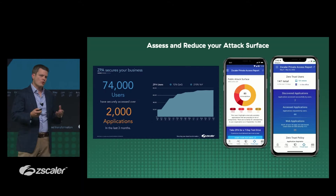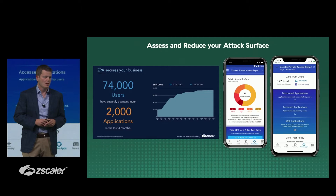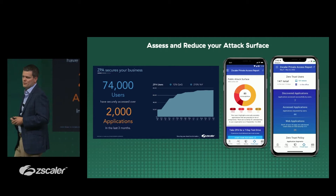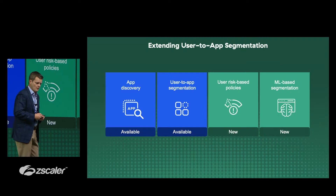Two things being brought into the Zscaler for users portfolio are visibility into your existing attack surface and visibility into your existing usage of Zscaler Private Access. These will be incorporated into the exec reporting suite, showing up in quarterly business review PowerPoints downloadable from the ZIA console. For an up-to-the-minute view, external attack surface data is included in the exec insights iOS app.